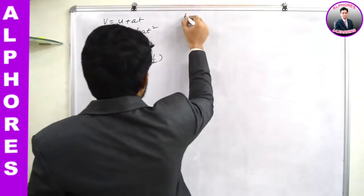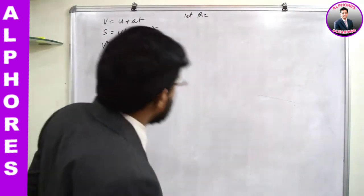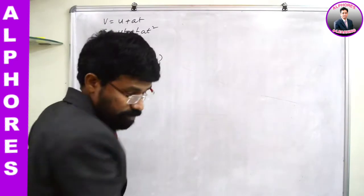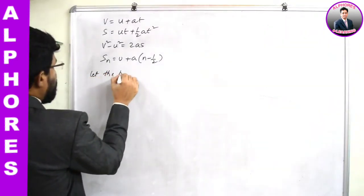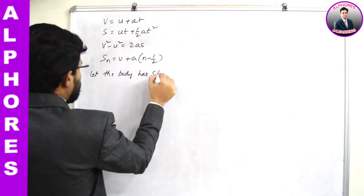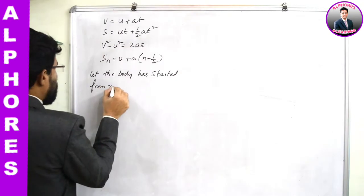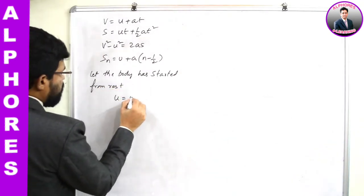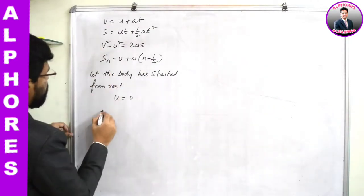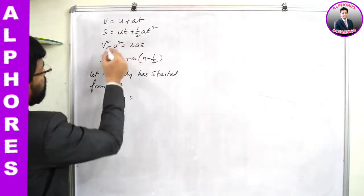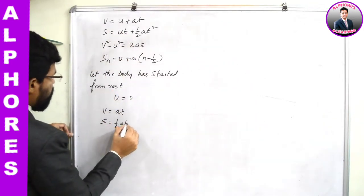What if the body starts from rest? If the body has started from rest, you can take u as 0 — initial velocity as 0. Therefore all these equations get modified: v = at (first equation, u is 0). Second equation, s = ½at².